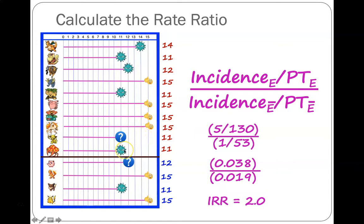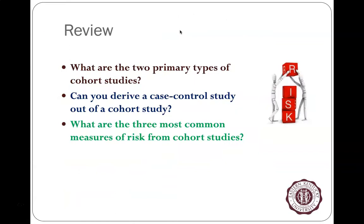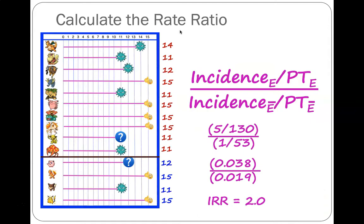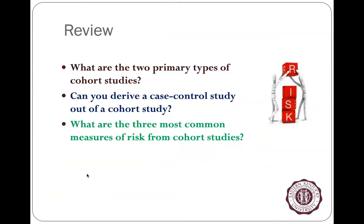You can use these rate ratios for outcomes like antibody response, death, heart attack, or diabetes diagnosis — there are many applications. For review: the two primary types of cohort studies are prospective and retrospective, though ambispective ones also exist. You can derive a case-control study out of a large cohort study — those are called nested case-controls. The three most common measures of risk from cohort studies include risk ratio, rate ratio, and odds ratio.